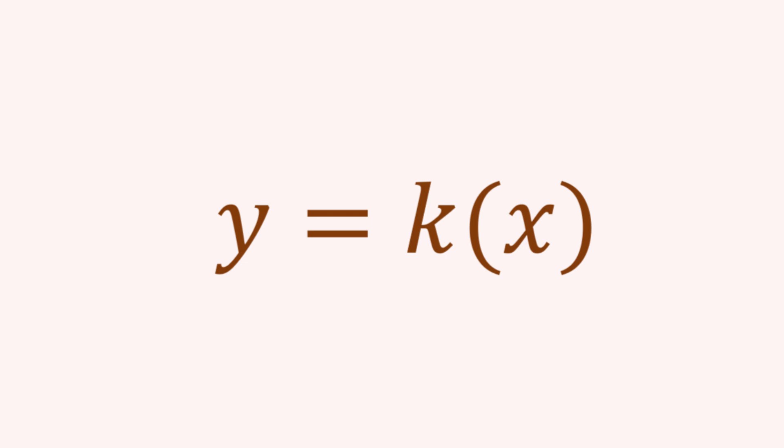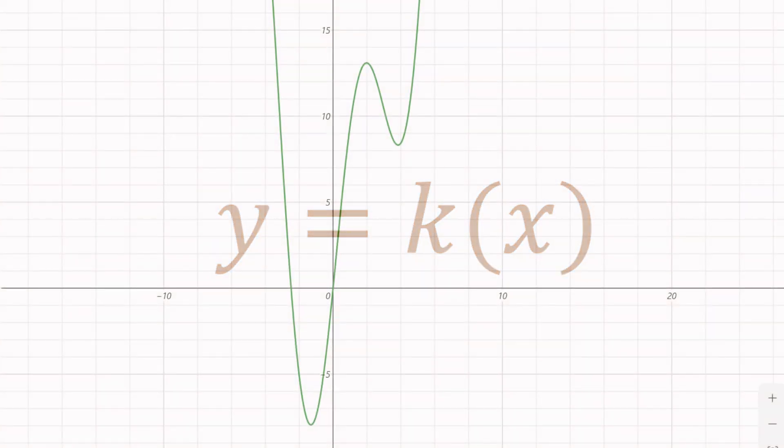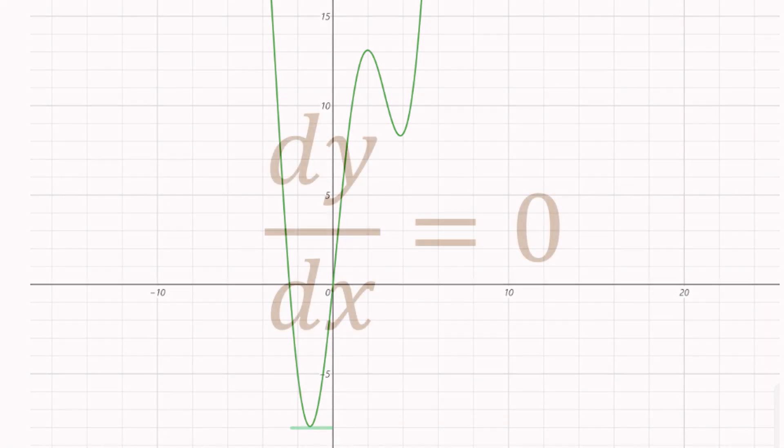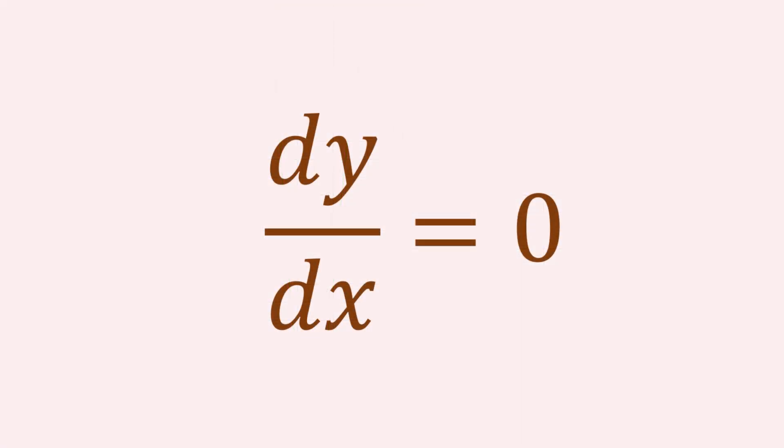For example, consider a 2D manifold defined by two variables as shown. In this function k of x, there is an extremal. Notice that the slope at that point is zero. So, by setting the derivative of the function equal to zero, the value of x that defines the position of the extremal can be found.